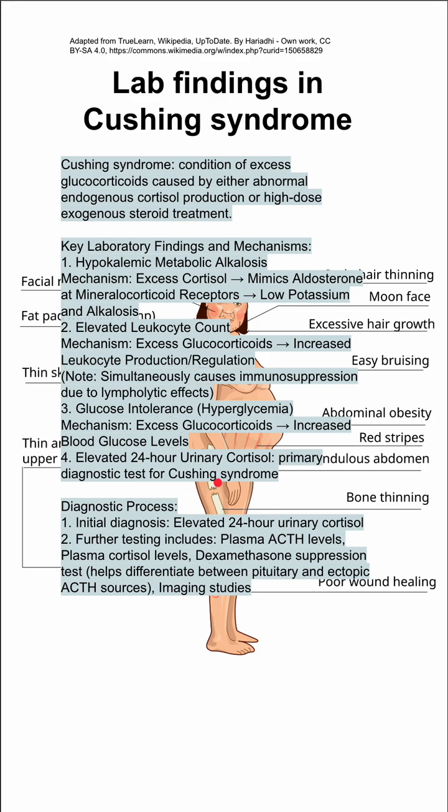Further testing can include plasma ACTH levels, plasma cortisol, and dexamethasone suppression tests, which help differentiate between pituitary and ectopic ACTH sources. Imaging studies may also be used if you're looking for an adenoma, for instance.